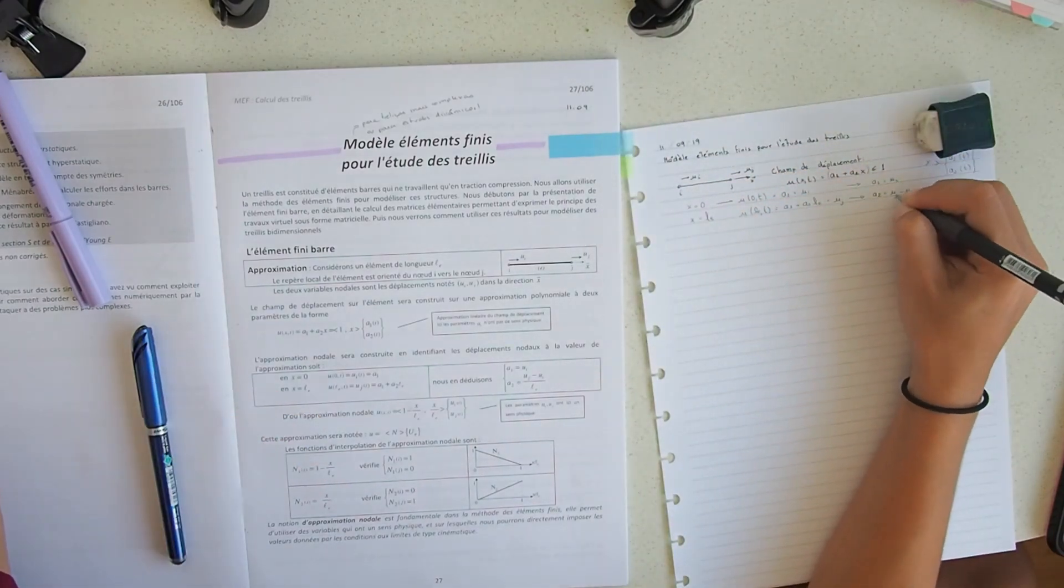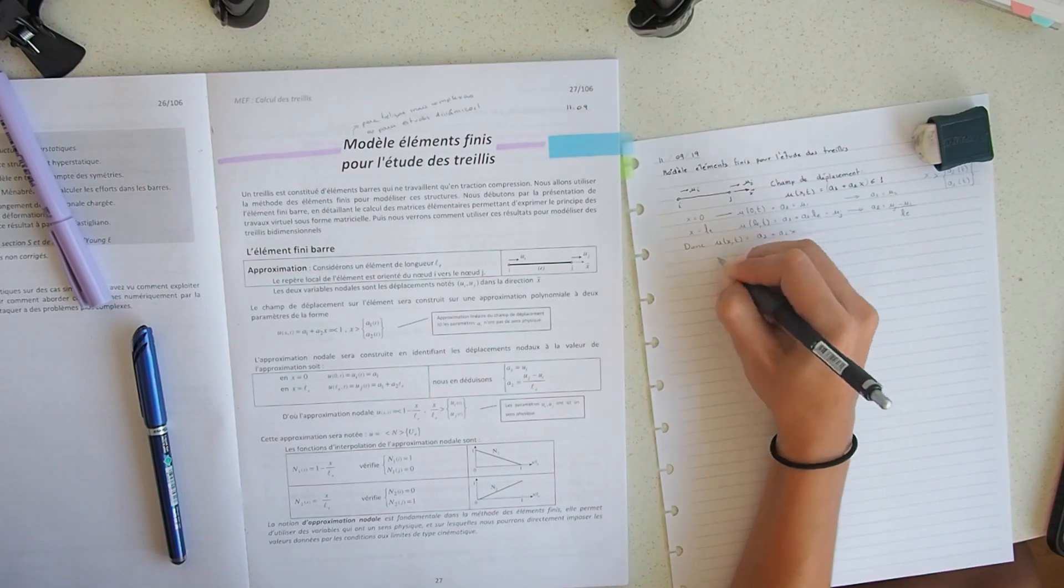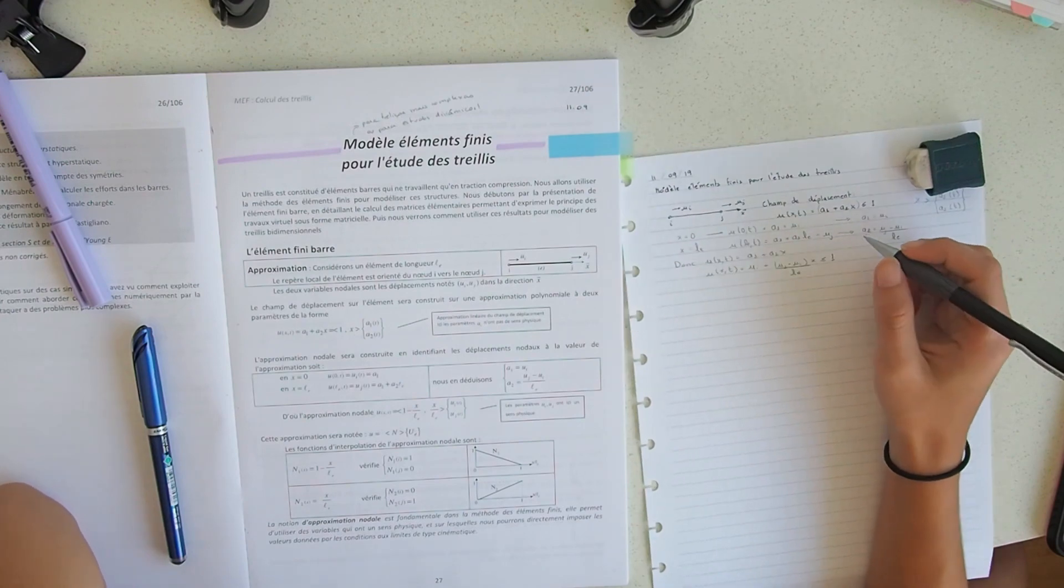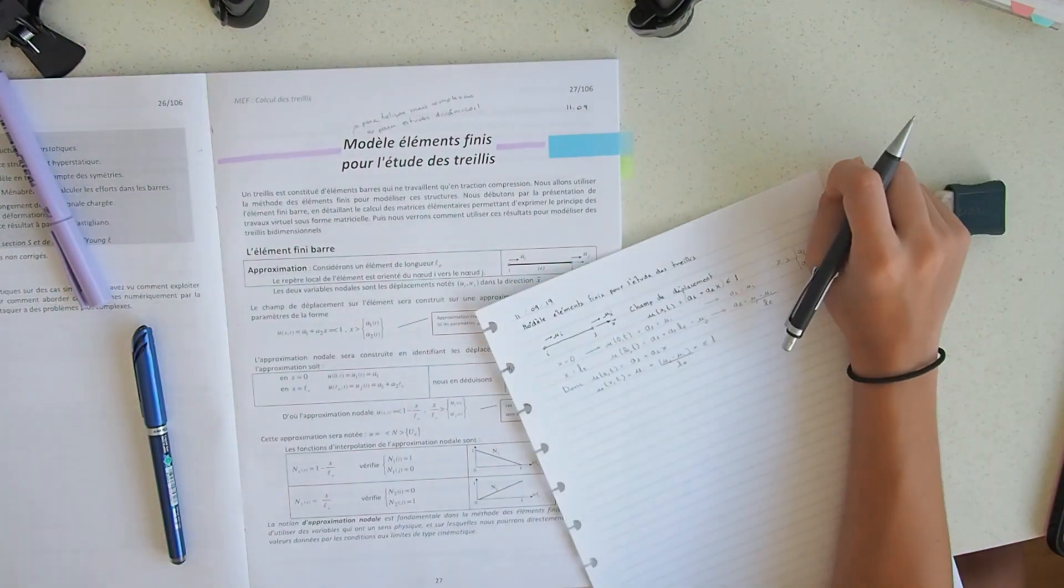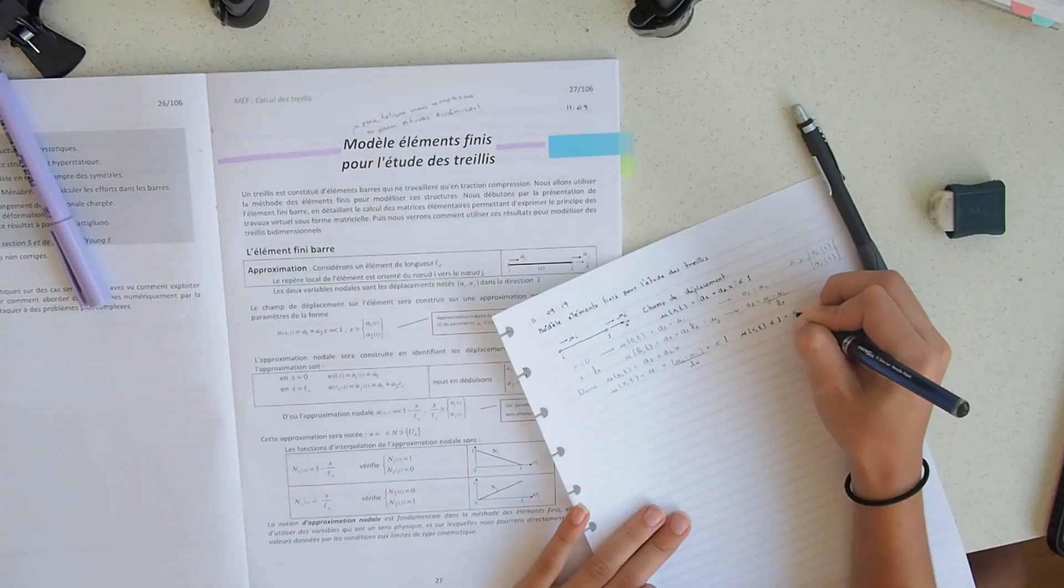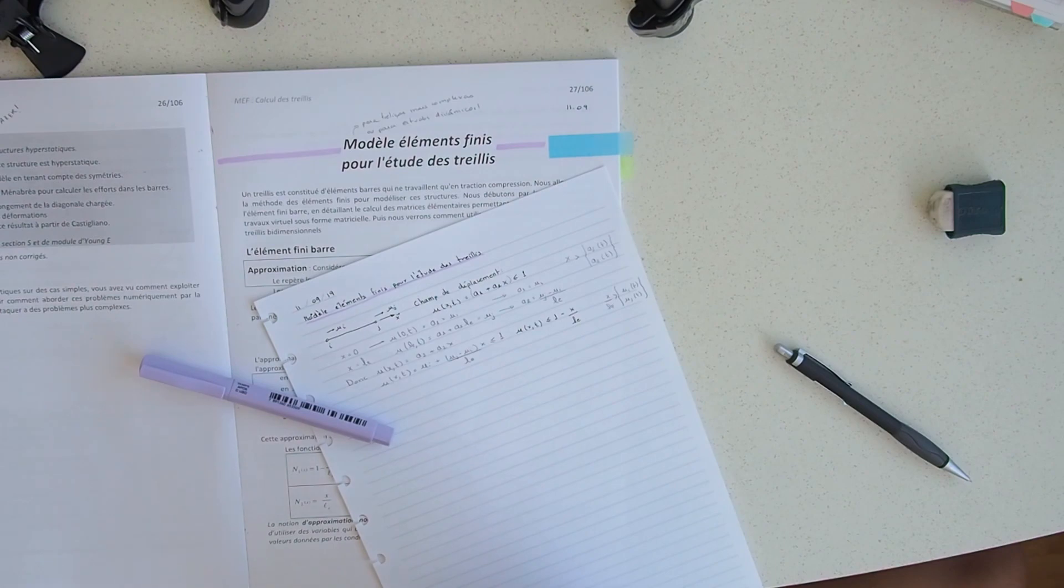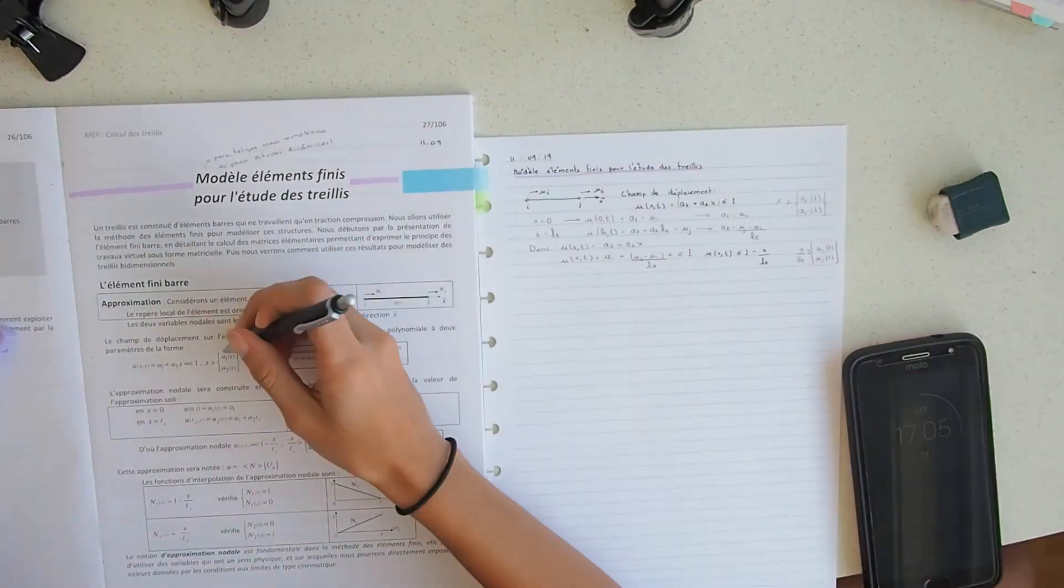One thing that I struggle a lot while studying is having my phone close by. Even though I use it eventually to search for words and stuff like that, it also distracts me a lot because I get a lot of messages on YouTube and also Instagram and WhatsApp, so it's very distracting.